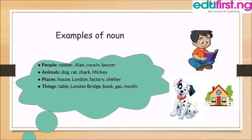In the form of animals can be lizard, dog, rat, cat. In the form of places can be school, London, street. In the form of things or objects can be pencils, books, etc.